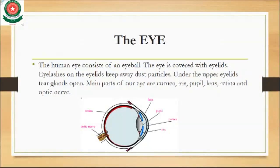Our eye can tell us what is going on around us. They can tell us the colors, the shapes, and also the movement of objects around us. The eye is an organ of sight and consists of an eyeball, which is the center of your eye. Our eye is covered with the eyelids, and eyelashes on the eyelids are used to keep away dust particles.